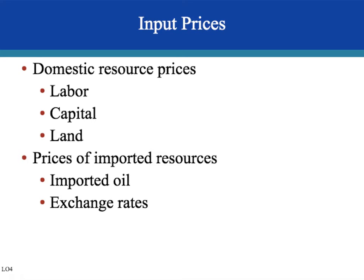Prices of imported resources also affect AS — for example, oil is a major U.S. import. The more expensive oil is, the less firms can supply at each price level; cheaper oil allows more supply at each price. Exchange rates matter too: if the U.S. dollar depreciates, foreign resources become more expensive, increasing input costs. A U.S. dollar depreciation will therefore shift aggregate supply to the left.